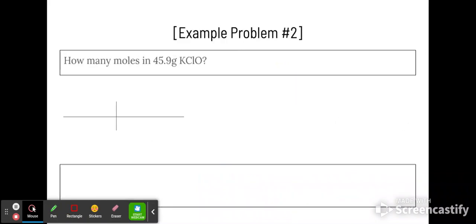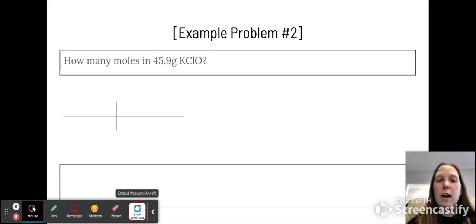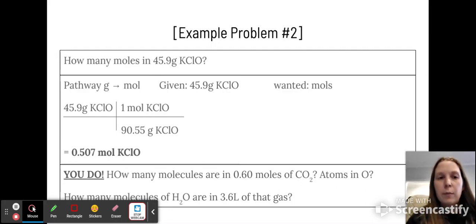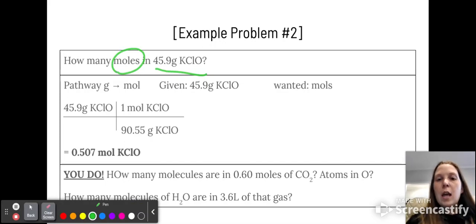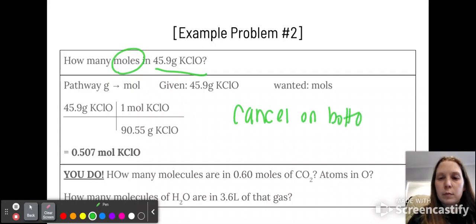All right. So we're going to see how many moles are in 45.9 grams of KClO. So our pathway is to go from grams to moles. So we're given grams, we're looking for moles, and whatever we're given is what we start with on the top of our T table, so you see that over here. We want to cancel those out, so we write it on the bottom. So as you can tell, we can mark out the grams of KClO, and we're left in moles, which is the unit that we want.